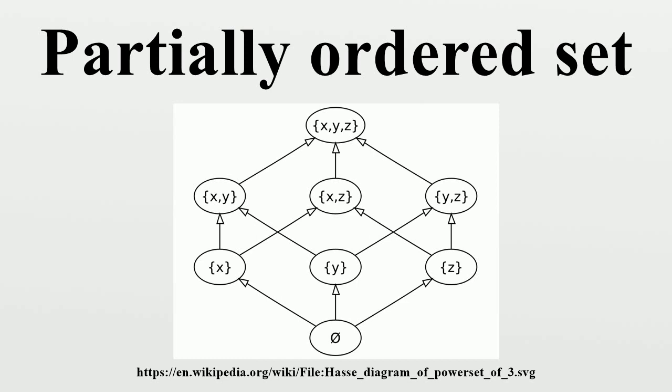Upper and lower bounds: For a subset A of P, an element X in P is an upper bound of A if A ≤ X for each element A in A. In particular, X need not be in A to be an upper bound of A. Similarly, an element X in P is a lower bound of A if X ≤ A for each element A in A. A greatest element of P is an upper bound of P itself, and a least element is a lower bound of P.